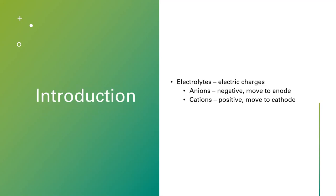Electrolytes are ions — they are elements, they are minerals. They are ions that are capable of carrying electric charges. These electric charges can be positive or negative. Ions that carry a positive charge are called cations, and ions that carry a negative charge are called anions.